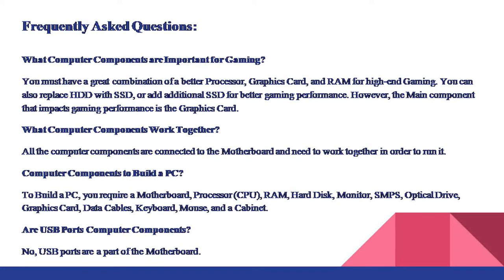What computer components work together? All the computer components are connected to the motherboard and need to work together in order to run it. What components do you need to build a PC? To build a PC, you require a motherboard, processor, CPU, RAM, hard disk, monitor, SMPS, optical drive, graphics card, data cables, keyboard, mouse, and a cabinet. Are USB ports computer components? No, USB ports are a part of the motherboard.